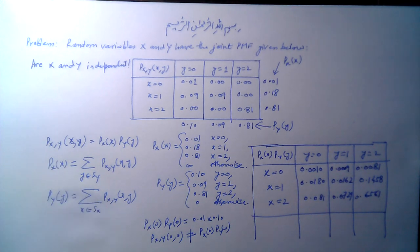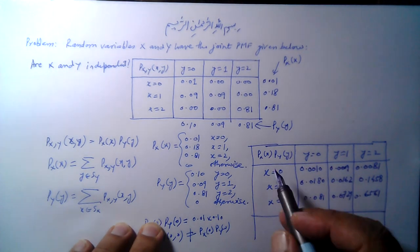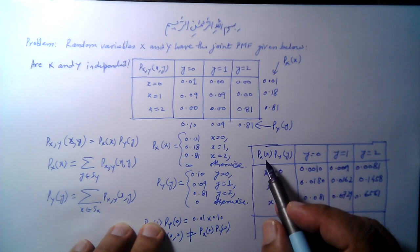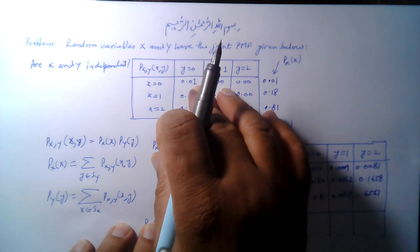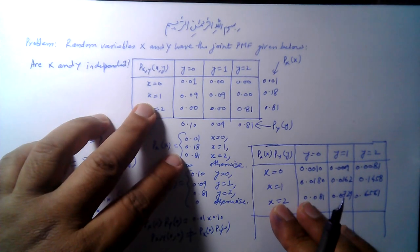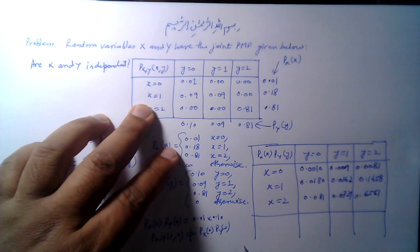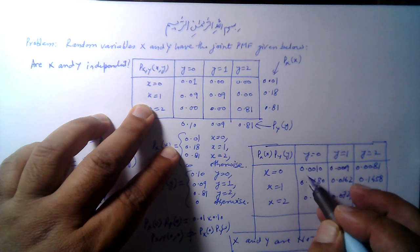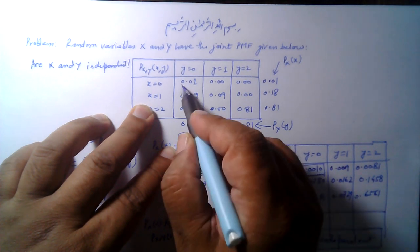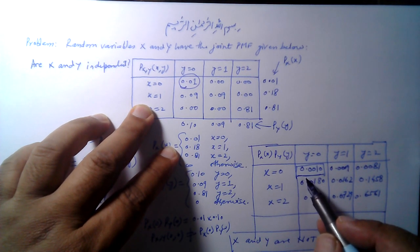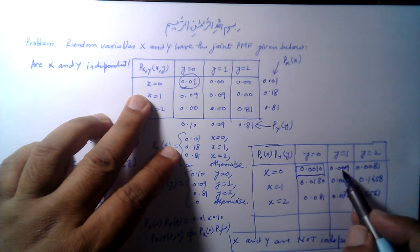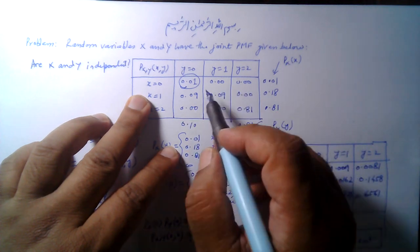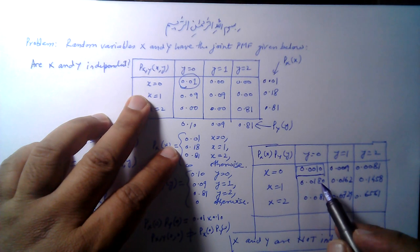We have now calculated the full product table. This table is entirely different from the joint PMF table — not even a single value matches. Therefore, random variables X and Y are not independent. Note that we could have concluded this at the very first value we calculated, since if even a single pair fails the equality, we can immediately say X and Y are not independent.